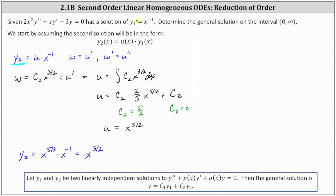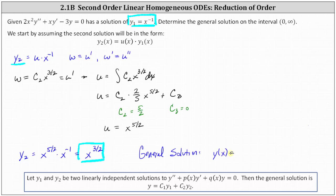Now we can finally determine the general solution. We know one solution is y1 equals x to the power of negative one, and a second solution is y2 equals x to the power of three halves. These two functions are linearly independent. Therefore, the general solution is the set of linear combinations of these two functions: y(x) equals c sub four times x to the power of negative one, plus c sub five times x to the power of three halves.